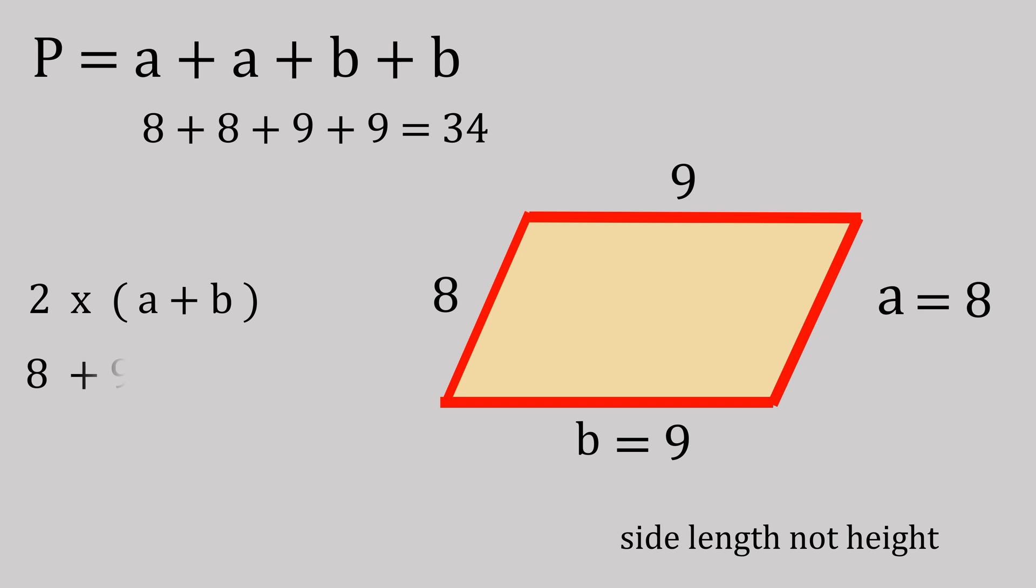Now a plus b is 17, times that by 2, same number, 34.